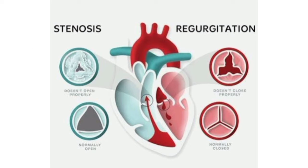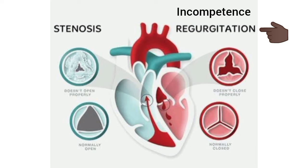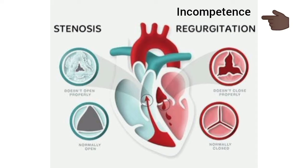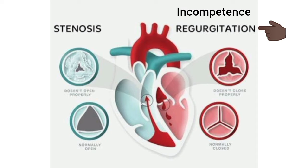Valvular diseases are of two types. Number one is stenosis, which means the narrowing of the heart valve. In stenosis, blood flows rapidly with turbulence through the narrow orifice of the valve, resulting in murmur. Number two is incompetence, which refers to the weakening of the heart valve. When the valve becomes weak, it cannot close properly, causing backflow of blood and resulting in turbulence. This condition is also called regurgitation or valvular insufficiency.